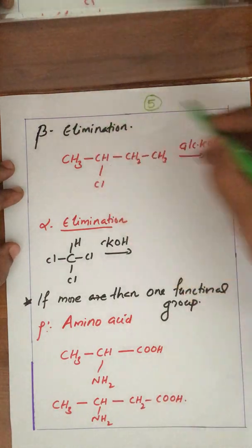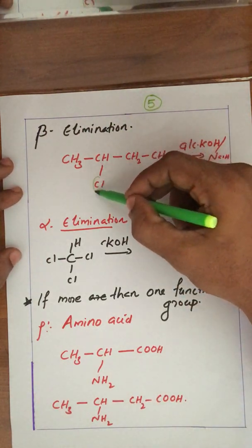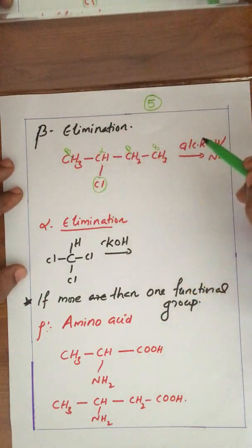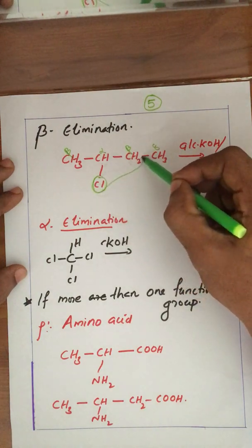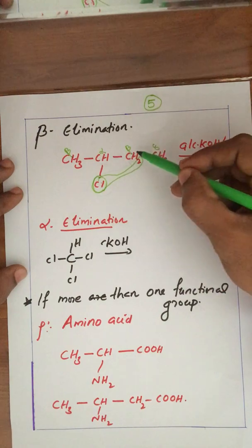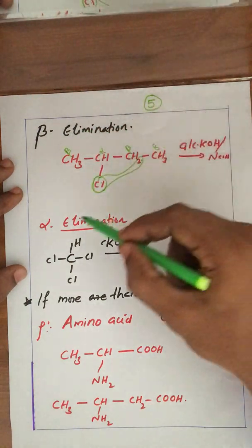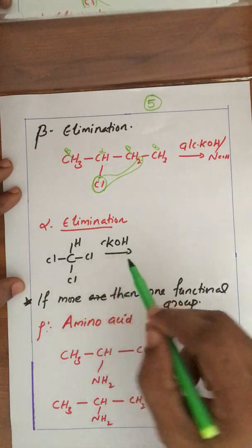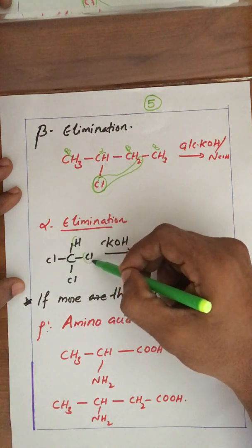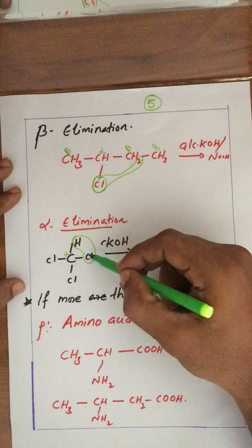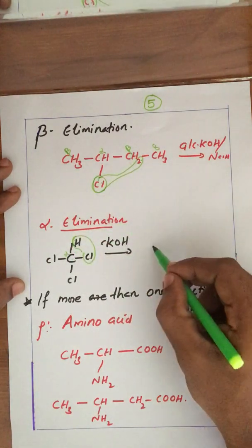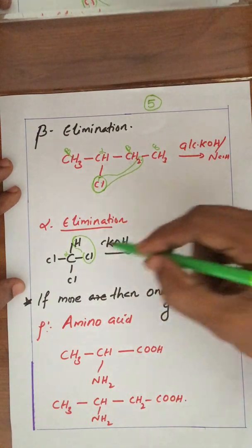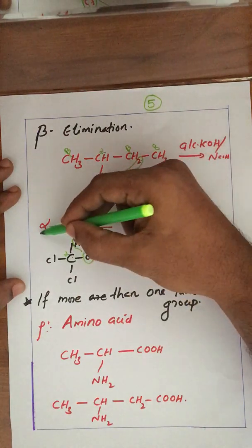Beta elimination — you may have heard about it. Here the chlorine is the most important group, connected with the alpha carbon. The next carbon is at the beta position. In beta elimination, HCl is removed: chlorine is removed from the alpha position and hydrogen is removed from the beta position. In alpha elimination, as seen in the Reimer-Tiemann reaction, both chlorine and hydrogen are removed from the alpha position, giving a CCl2 carbene as the intermediate.